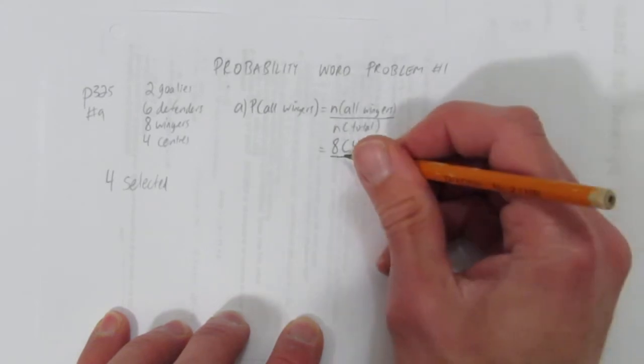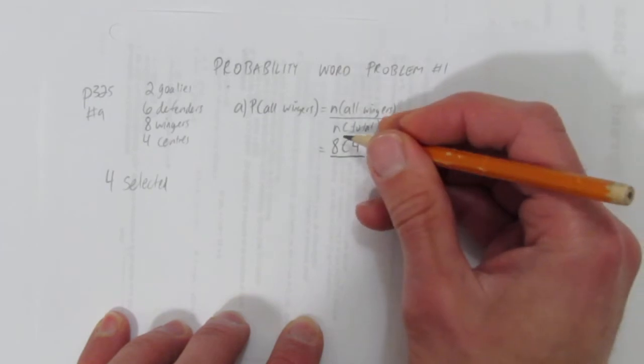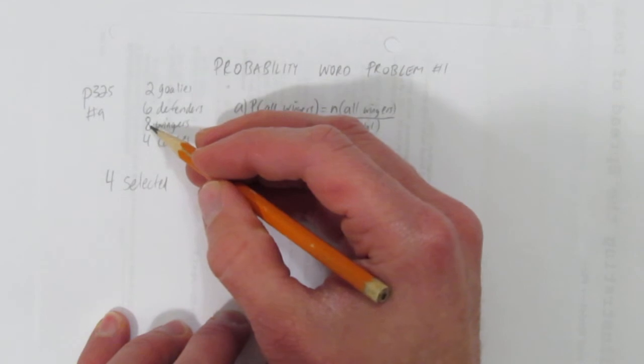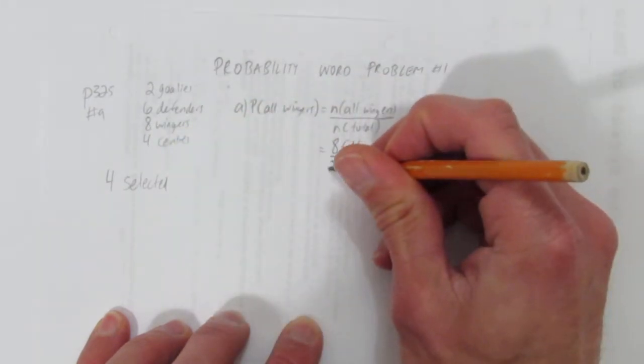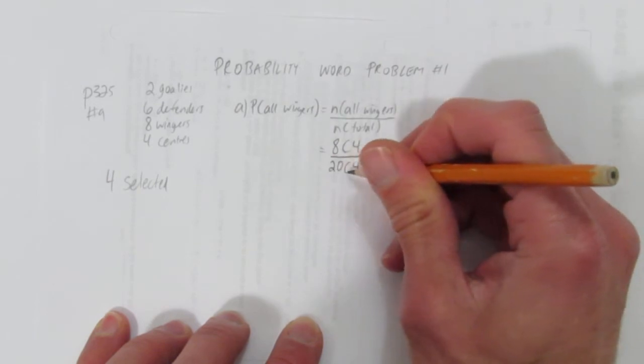And to calculate probability, we divide that by the number of total possibilities of how we could choose. We have two, six, that's eight, plus eight is sixteen, plus four. We have a total of twenty players to choose from, and our total choices would be twenty choose four.